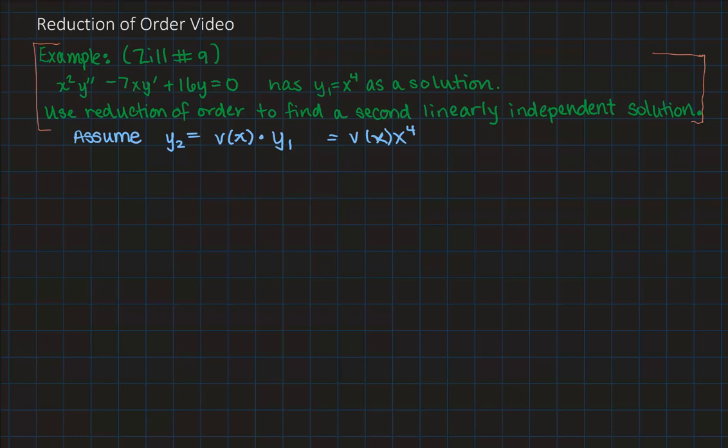But it's always going to be the case that when you're doing a reduction of order problem it's often easier, especially if you haven't memorized the full form, to start from just looking at it as v of x y1. So we're saying we want y2 to solve our equation so what we'll need to do is be able to put y2 into the equation. So we're saying y2 or x squared y2 double prime minus 7x y2 prime plus 16 y2 has to equal 0. So now I'd like to replace all the y2's with the associated expressions based upon the fact that y2 is actually a function multiple v of x times my initial solution y1. So we're going to need to find the derivatives of y2.